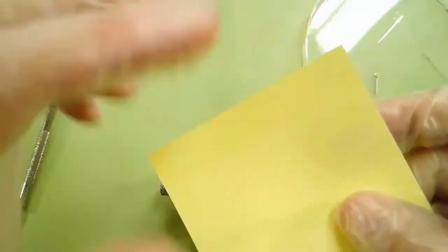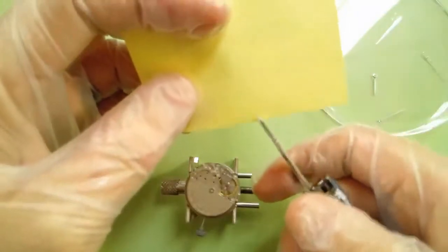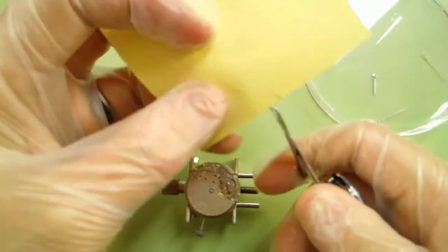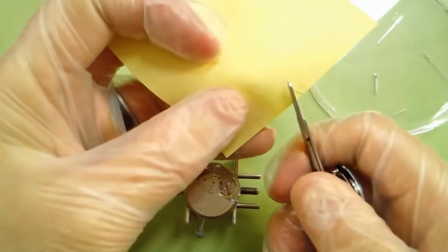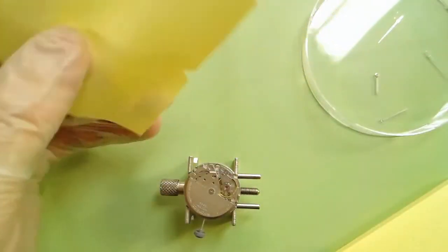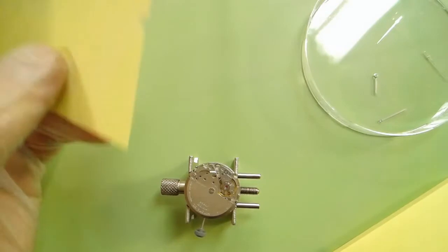On the sticky side of the sticky note, this is the sticky part, you want to cut a notch. Just a triangular notch in the sticky part of the sticky note.